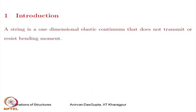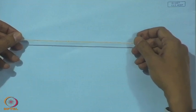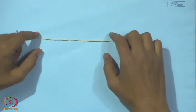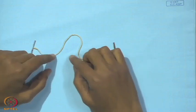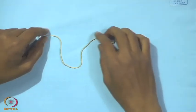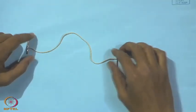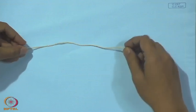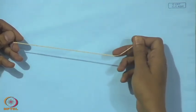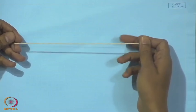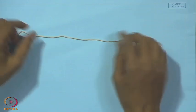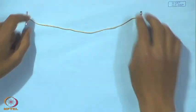I will show you some examples of strings. This is an ordinary tag which is like a string because it satisfies the definition — it is a one-dimensional continuum and it does not resist bending in any way. Whatever shape I give it, it will retain that. The restoring force comes when I make it taut; this tension that I give to the string acts like the restoring force. The restoring force is produced by the tension in the string; otherwise the string will take any shape.